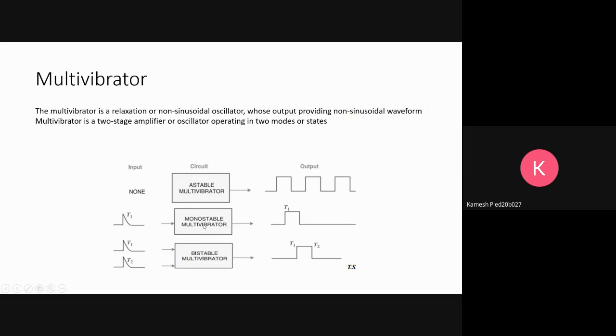In monostable multivibrator, when one trigger pulse is given, there is a change in state from stable to unstable state, and it comes back on its own to stable state. In bistable multivibrator, there is a requirement of two trigger pulses. The first trigger pulse makes it unstable, and it keeps continuing until the second trigger pulse is applied.